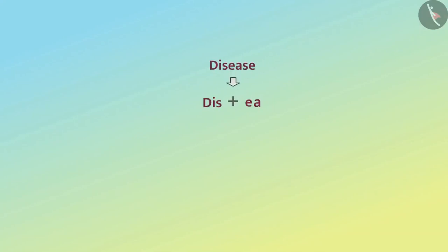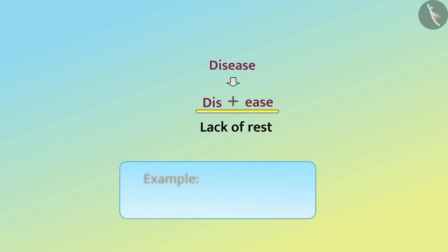In the previous video, we learned that disease can be written as 'dis' plus 'ease', and from this we can take the meaning as lack of rest. For example, cold and cough, elephantiasis, and many more.